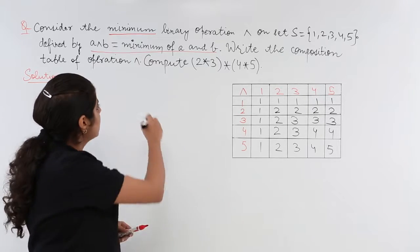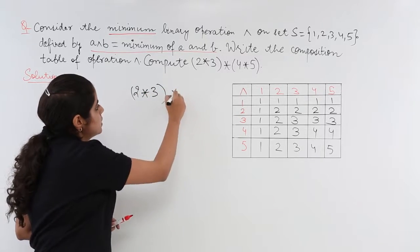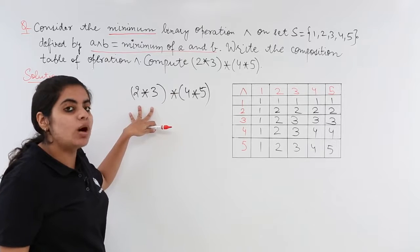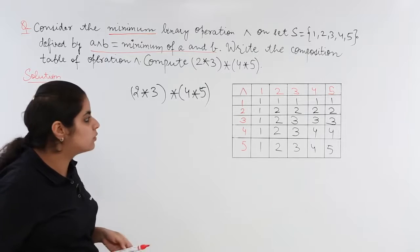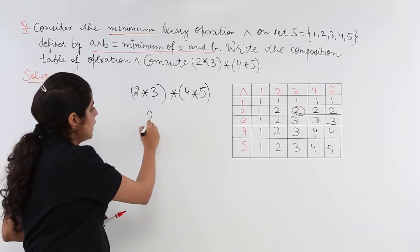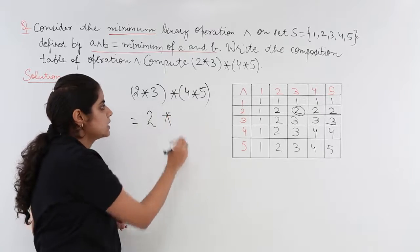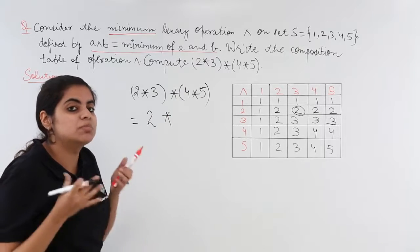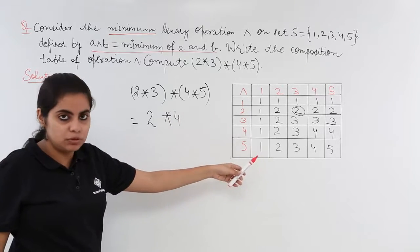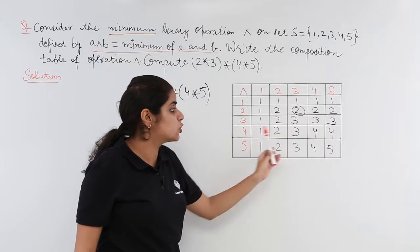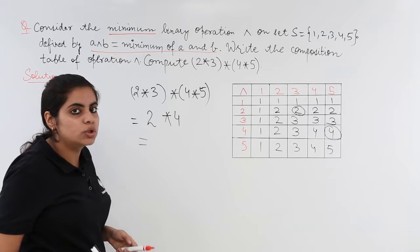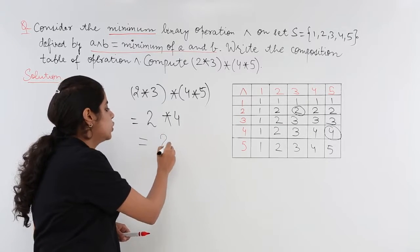Let's move to this question again. You are asked to find this value: 2 star 3 star 4 star 5. 2 star 3 means you apply the binary operation on 2 and 3. What is minimum of 2 and 3? 2 star 3 is 2. So you write the answer as 2 star, followed as is. What about 4 star 5? 4 star 5 means minimum of 4 and 5, which is 4. Now 2 star 4 means minimum of 2 and 4, which is 2. This is the answer.